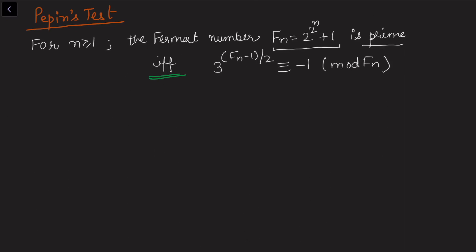Take F3. By the formula, since n = 3, we have F3 = 2^(2^3) + 1 = 2^8 + 1 = 257. Now let's apply the test in this case.